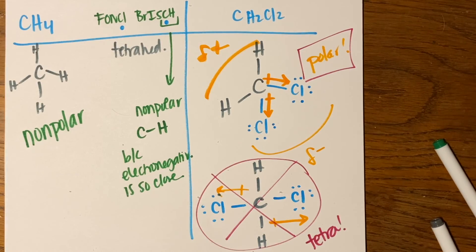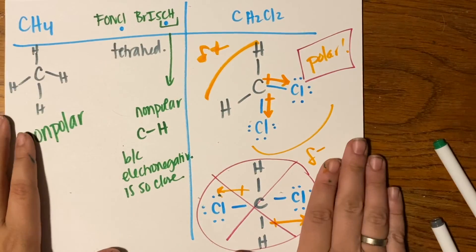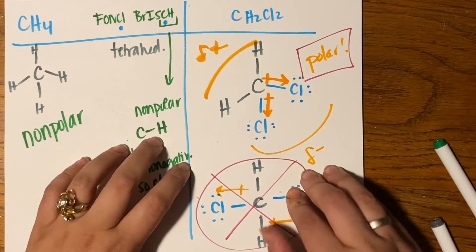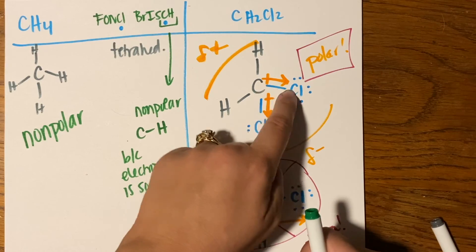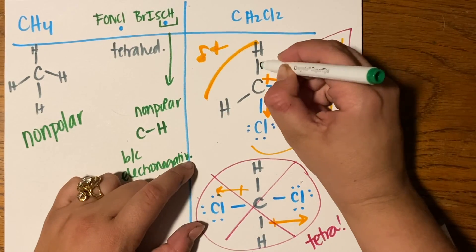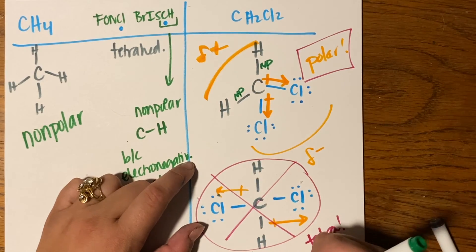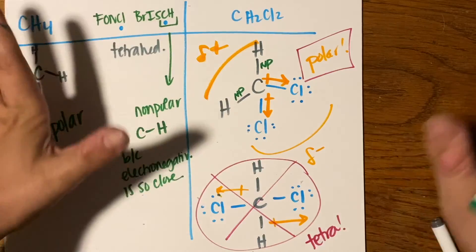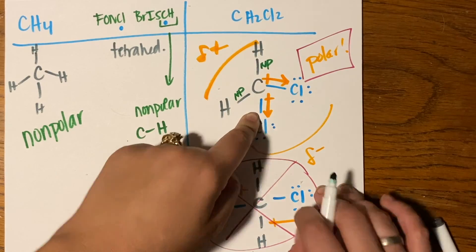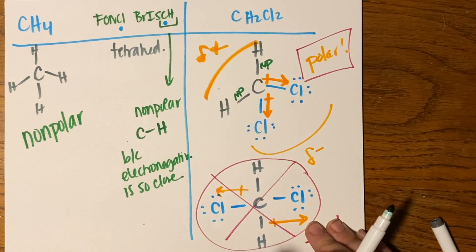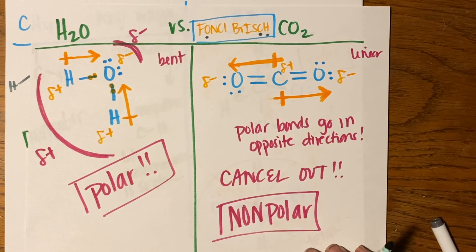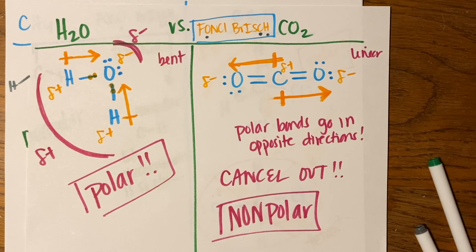So you should be able to go through the different molecular shapes, identify which bonds are polar and which are non-polar, and then take a big step back and look at whether the overall molecule is going to be polar or non-polar. That is it for chapter five - good luck!